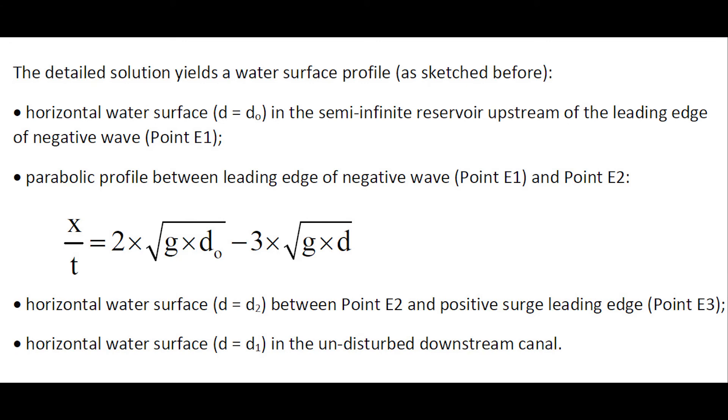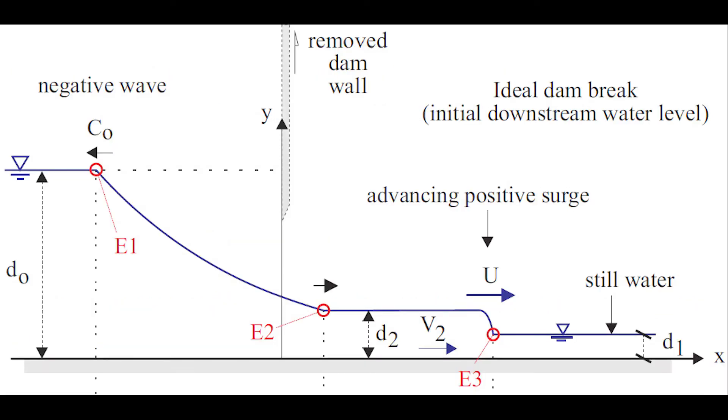The detailed solution yields a free surface profile with a horizontal water surface in the semi-infinite reservoir, a parabolic profile, a horizontal water surface, and then the positive surge leading edge, and of course the undisturbed downstream canal.